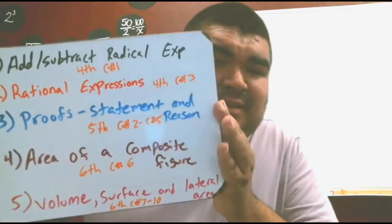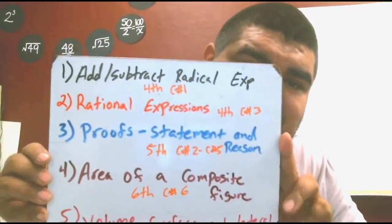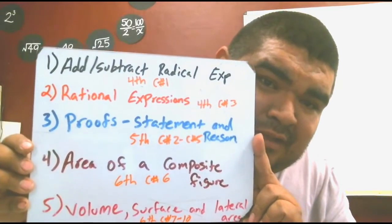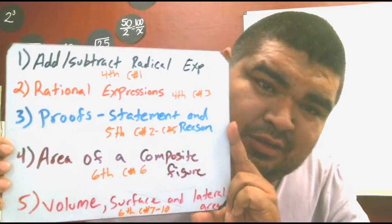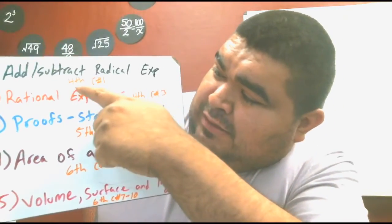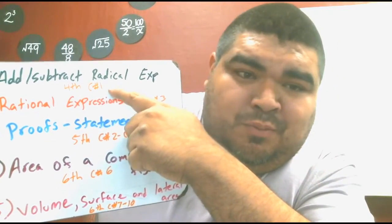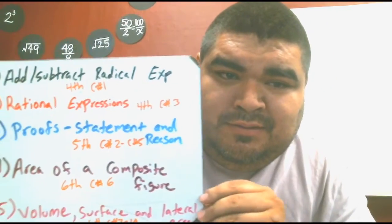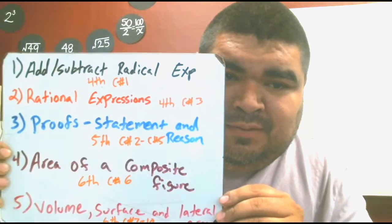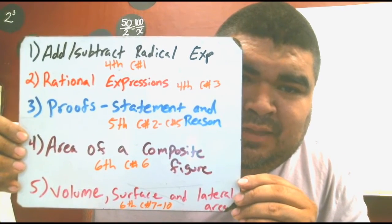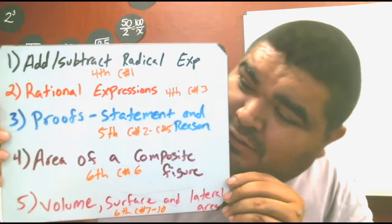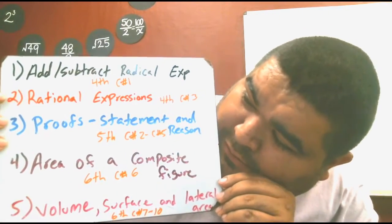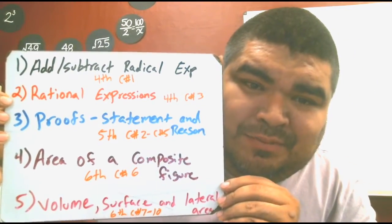Number one: adding and subtracting rational expressions — that's the fourth six-weeks, concept one. Number two: rational expressions, which is also the fourth six-weeks, concept number three.